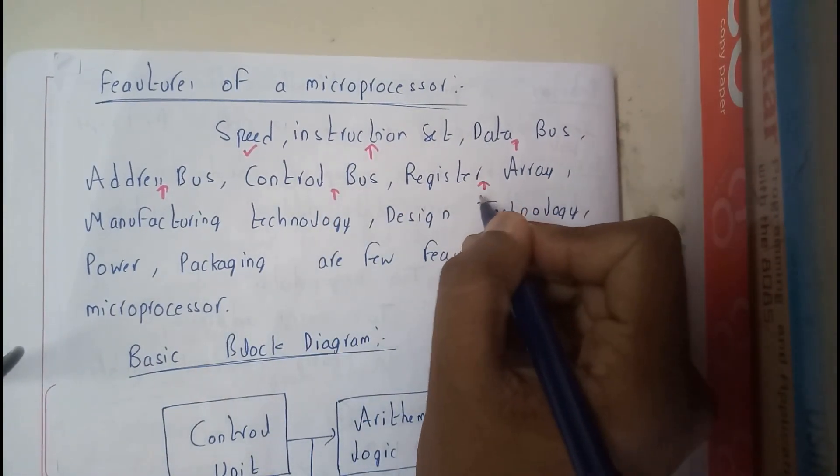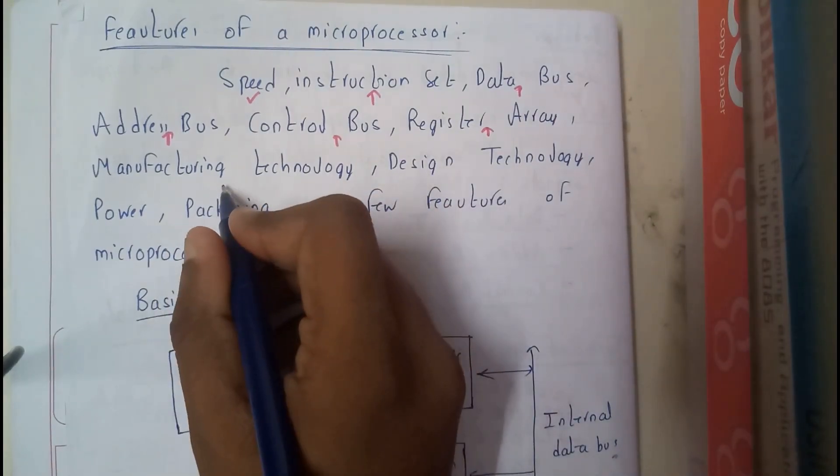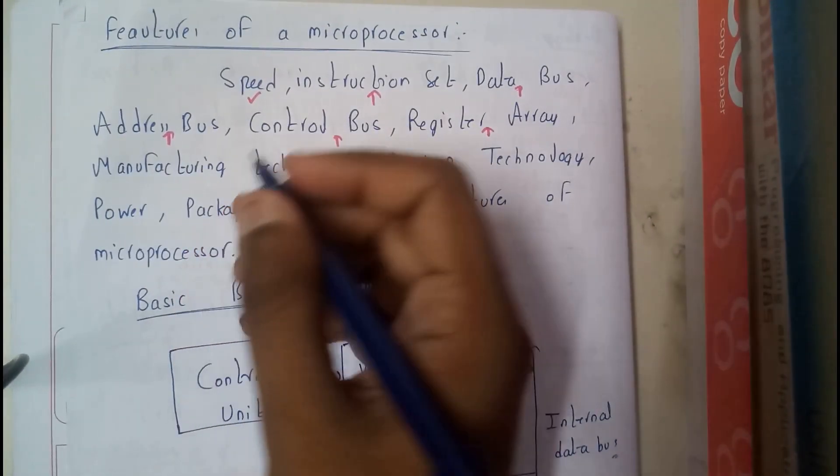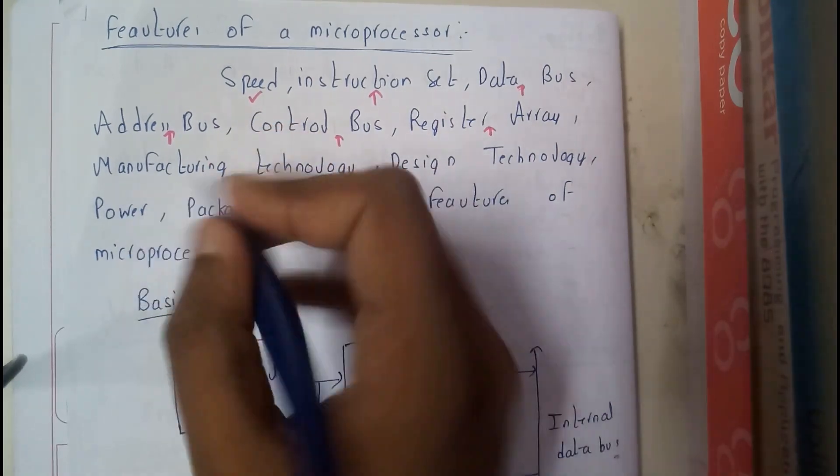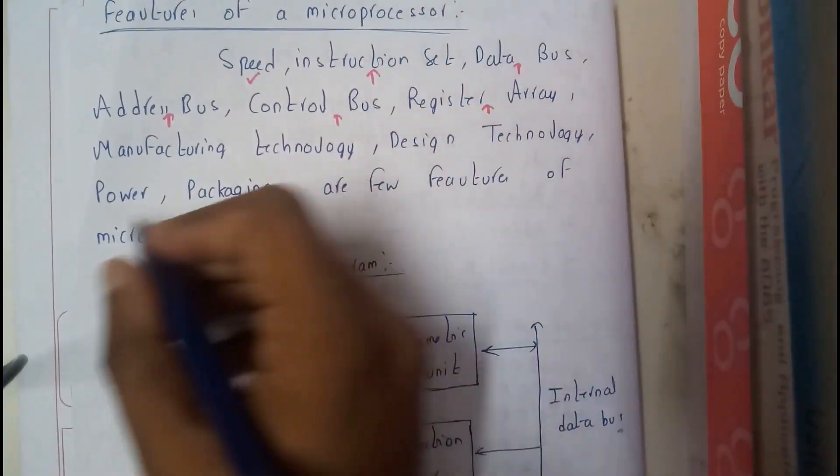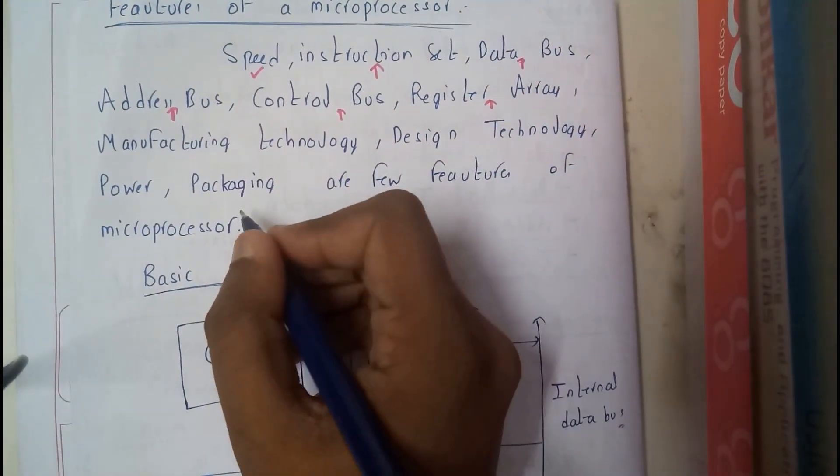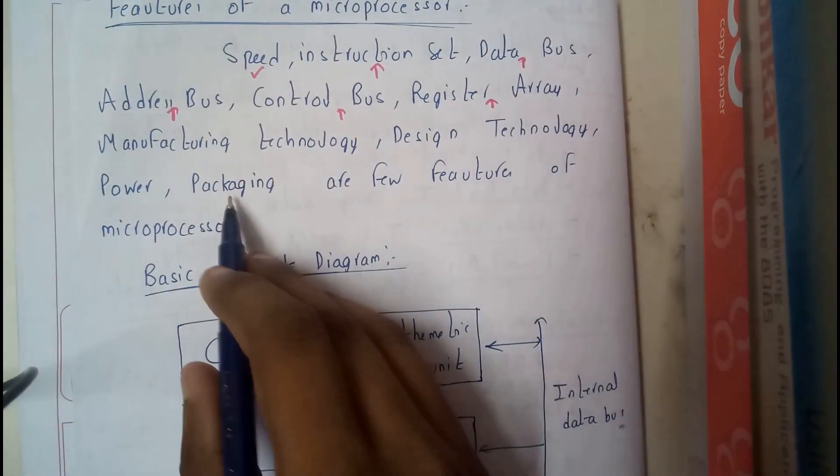Manufacturing technology should be good, that may be of n-type or p-type or HMOS or NMOS technology, any kind of technology. And designing technology, power, and packaging are few features of the microprocessor.